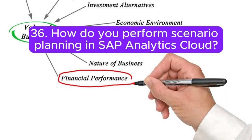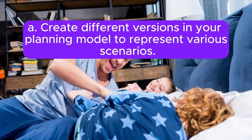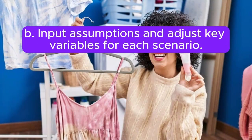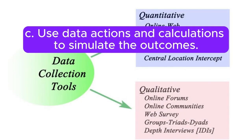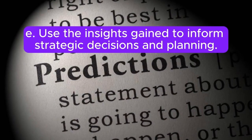Question 36: How do you perform scenario planning in SAP Analytics Cloud? Answer: To perform scenario planning in SAP Analytics Cloud: A. Create different versions in your planning model to represent various scenarios. B. Input assumptions and adjust key variables for each scenario. C. Use data actions and calculations to simulate the outcomes. D. Compare the results of different scenarios using visualizations and reports. E. Use the insights gained to inform strategic decisions and planning.